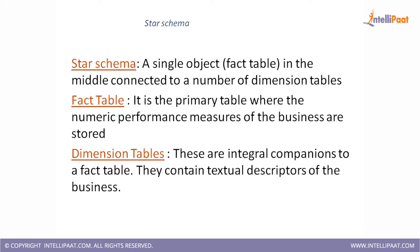Dimension tables are tables which have textual data. For example, when you have a product, you will have product ID and product description — all the textual information of that product. So the product table is your dimension table. A fact table is a table where you save all your measures — your numerical values, like sales, profit, and quantity sold. The fact table will have only foreign key columns and numerical measures, whereas dimension tables will have textual attributes.